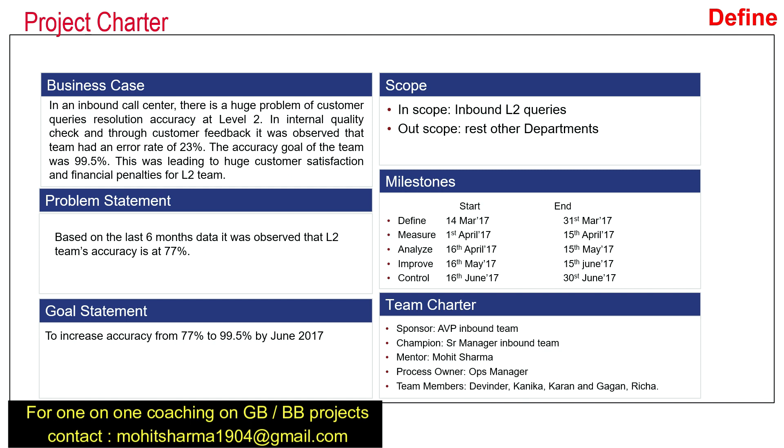In the project charter, for the problem statement, they looked at data for the last six months and observed that the accuracy of the team was at 77%. They set the goal to increase accuracy from 77% to 99.5% by June 2017. The scope and out-of-scope were also defined. The team started the project in March 2017 and finished it by June 2017.